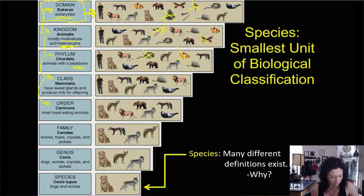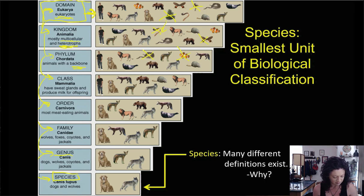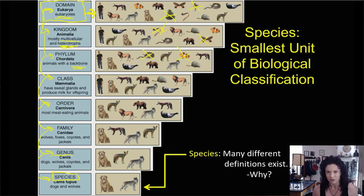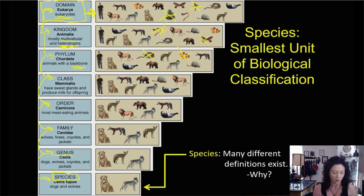We can keep going and going. If we drop down into Class Mammalia, we're looking at animals that have sweat glands and that produce milk for their offspring. Anything that's not a mammal — for example, a reptile or a fish — drops out. We can keep breaking classes down into orders, orders into families, families into genera, which is the plural of genus, until finally we get to the bottom of the list: species. Species generally are defined as a single type of living thing — and that seems like a straightforward definition, but it's not.